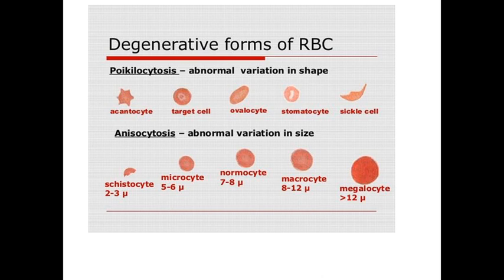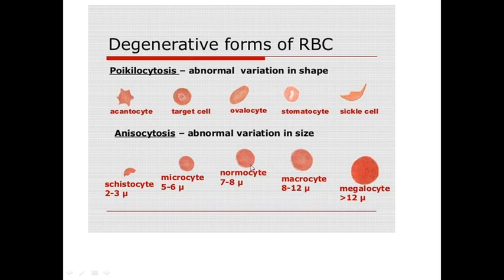In blood tests and blood smear we can see different sizes and shapes of RBCs. If we see abnormal variation in shape, it is called poikilocytosis — including acanthocytes, target cells, ovalocytes, or sickle cells, for example sickle cell anemia. Anisocytosis refers to abnormal variation in size: microcytes are small RBCs, normal size is 7 to 8 micrometers, macrocytes are 8 to 12, and megalocytes are more than 12 micrometers.